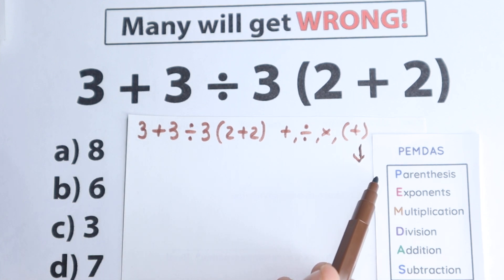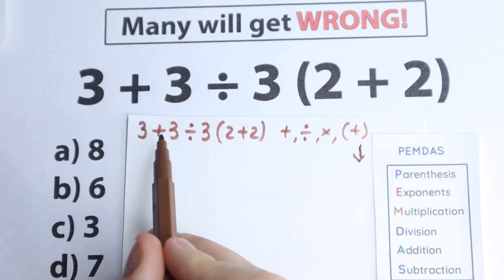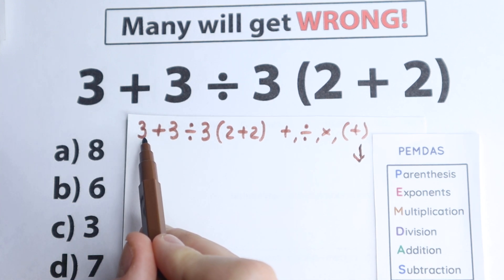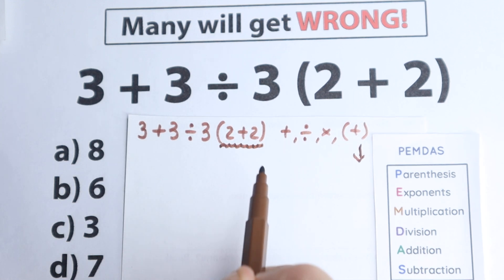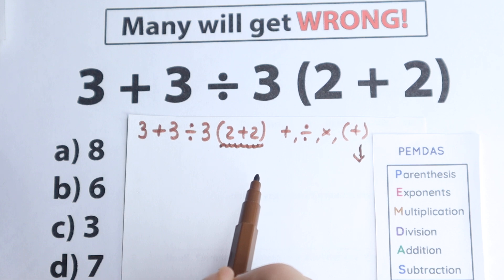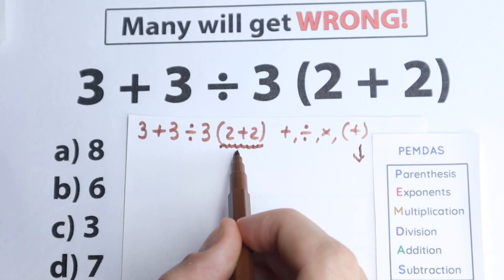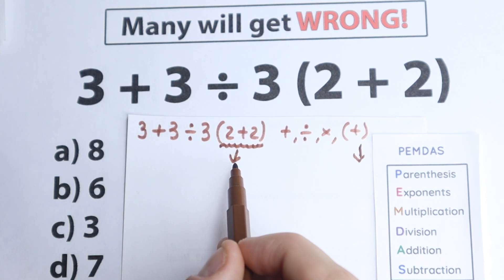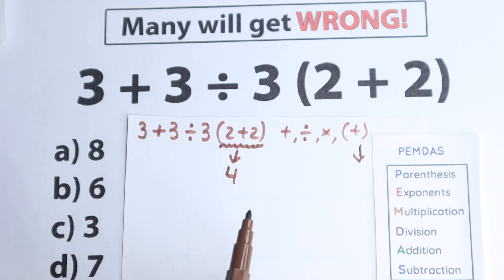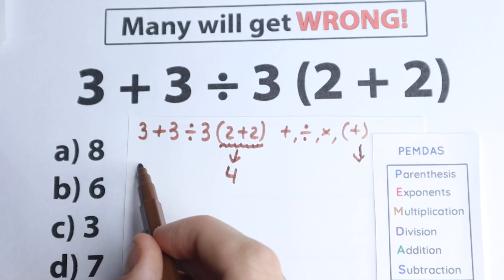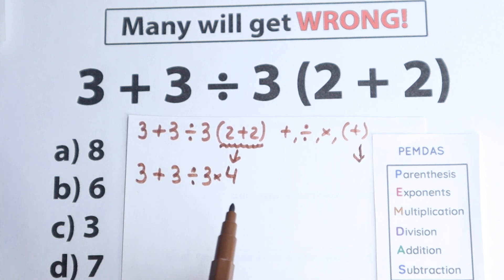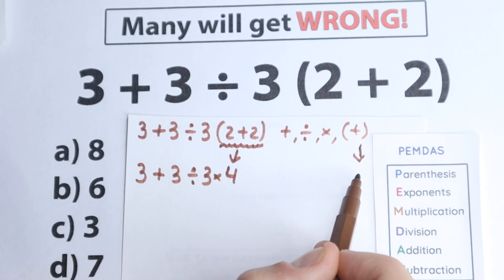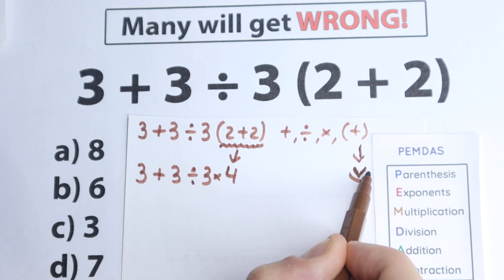The first step is parentheses. We have parentheses right here in our question — we have addition, division, and right here we have parentheses. So we need to start from the parentheses. So 2 plus 2 is our first step, and everyone knows that 2 plus 2 equals 4. So we replace the parentheses with 4, and the expression from the beginning becomes: 3 plus 3 divided by 3 times 4. After this first step we have this expression, and we no longer have any parentheses — we have completely solved the parentheses part.